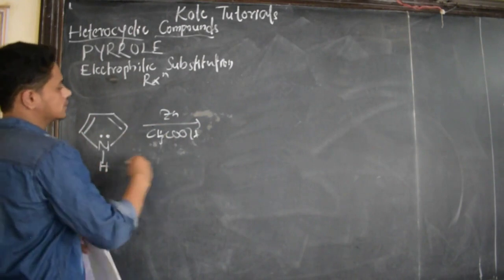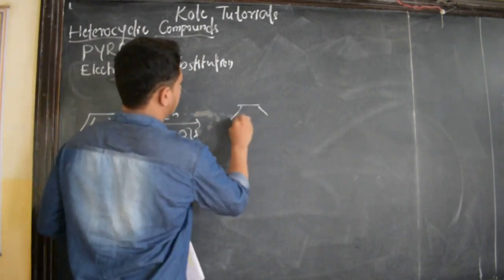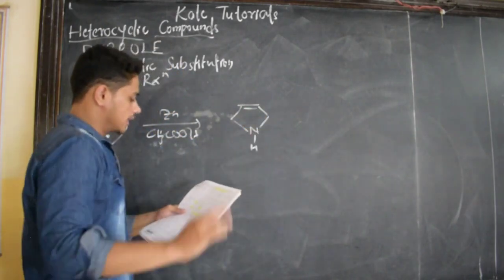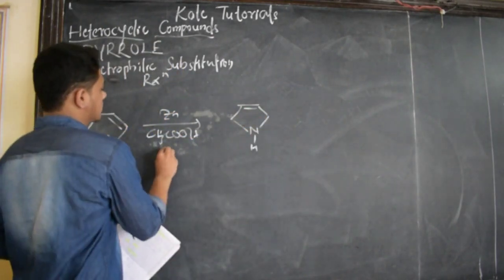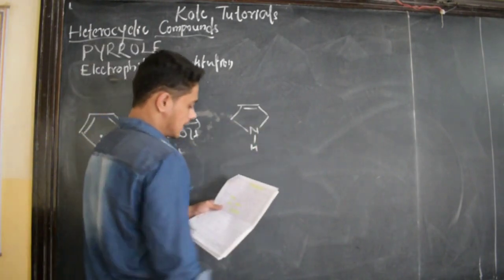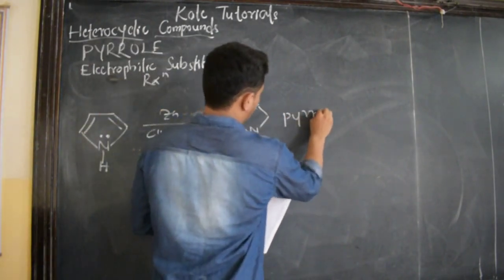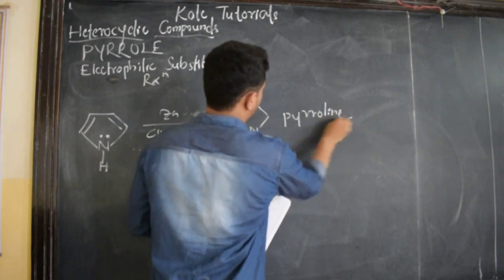It forms like this - the compound will be like this. Only two hydrogens are added, it gives two hydrogens, here one and here one, and the name of this is pyrrolein. We get the compound pyrrolein.